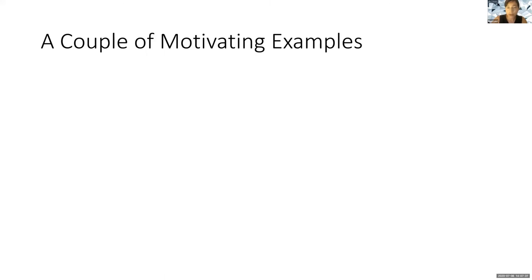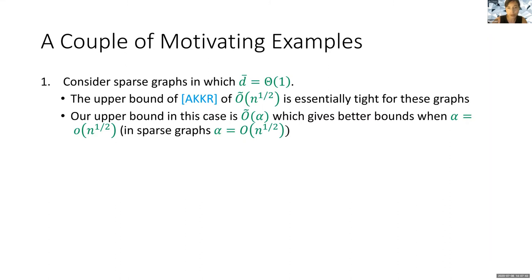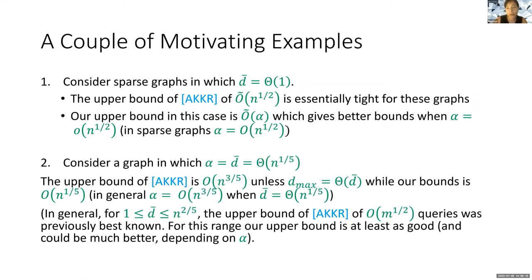Before explaining our algorithm, I would like to give some motivating examples. Consider sparse graphs in which the average degree is constant. The upper bound of Alon et al. of √n is essentially tight for these graphs. Our upper bound in this case is Õ(alpha), which gives better bounds when alpha is little-o of √n. In any case, in sparse graphs alpha is at most √n, which means our algorithm is not worse than the algorithm of Alon et al. for this case.